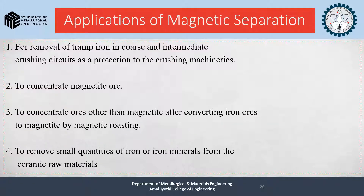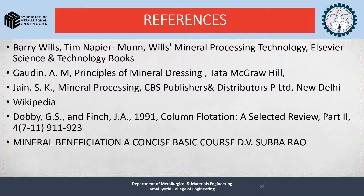Applications of magnetic separation include: first, removal of tramp iron in coarse and intermediate crushing circuits as protection for crushing machinery; second, to concentrate magnetite ore; third, to concentrate ores other than magnetite after converting iron ores to magnetite by magnetic roasting; and fourth, to remove small quantities of iron or iron minerals from ceramic raw materials.